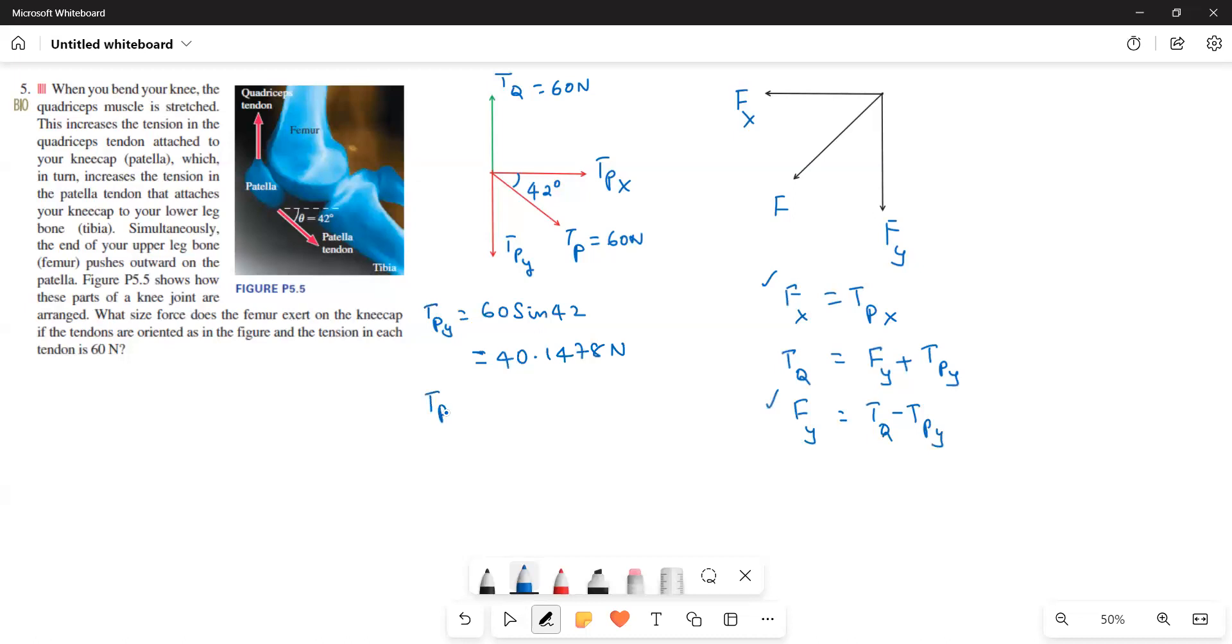And then I will write TPx. TPx is equal to cos component. So 60 cos 42. What is that value? 60 cos 42 is equal to 44.5886 N.